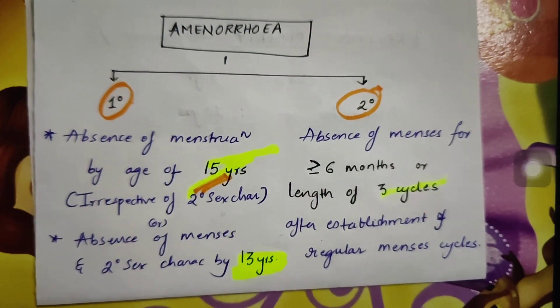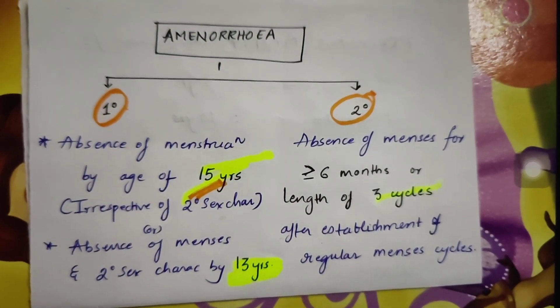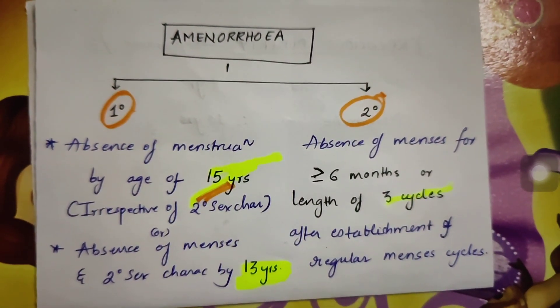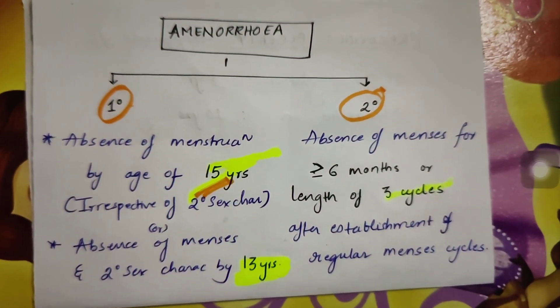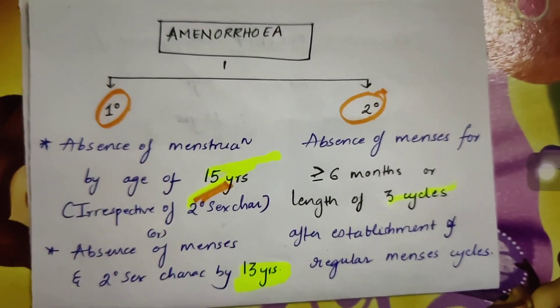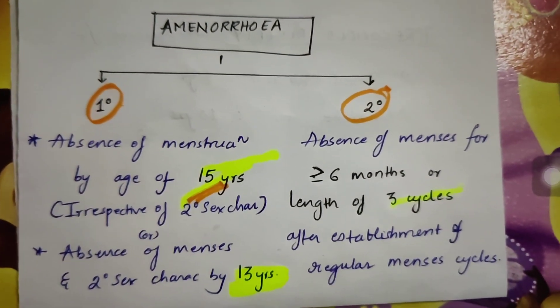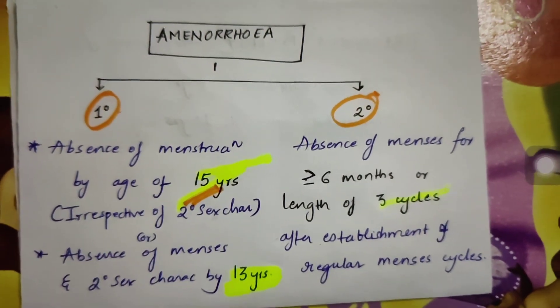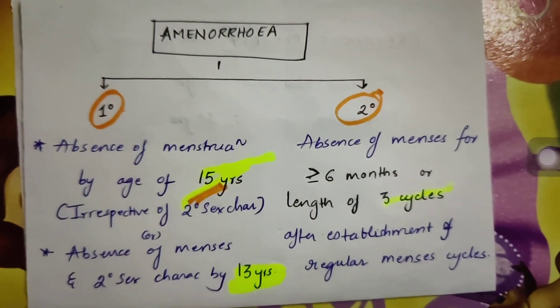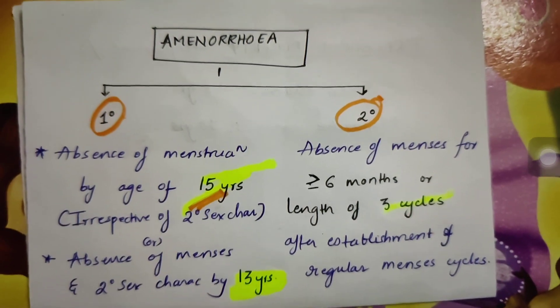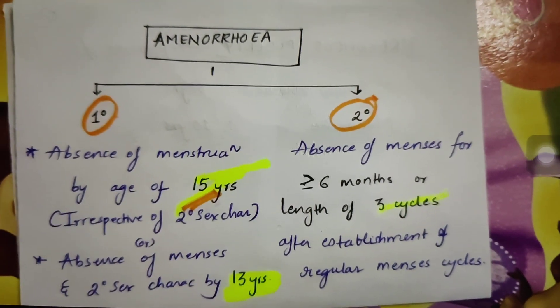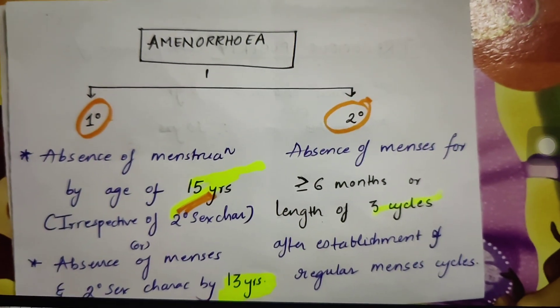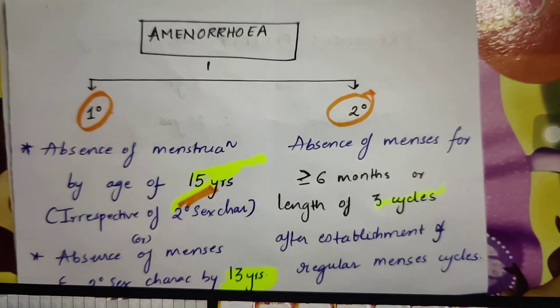The topic for today that I have chosen is amenorrhea. It is an important high yield topic from gynec. The kind of questions that you usually get from this topic are clinical. They give you a few symptoms or provide you with the karyotyping of the patient and the presentation, and ask you to either diagnose or determine the treatment of the condition. You must know all the differential diagnoses under primary amenorrhea and some tips and tricks to exclude conditions and finally get to the answer.